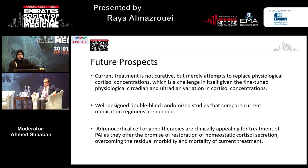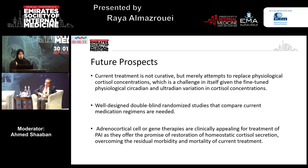For future prospects: current treatment is not curative — it is just replacement, trying to mimic the circadian rhythm as best we can. Future options aim to also cover ultradian variation. We need well-designed double-blind randomized trials to compare current medication regimens — there is already one trial registered comparing Plenadren with another form of modified-release hydrocortisone called Chronocort, which is only approved for patients with congenital adrenal hyperplasia. Adrenal cortical cell or gene therapy is a future prospect for patients with primary adrenal insufficiency. Thank you for listening, and I am on time.